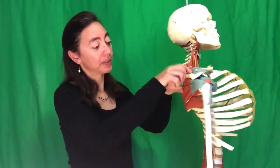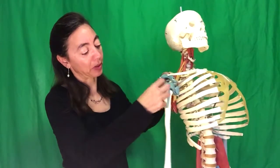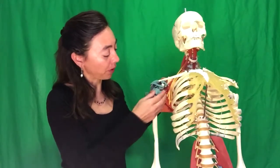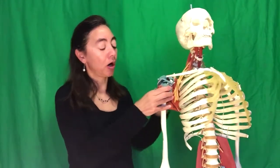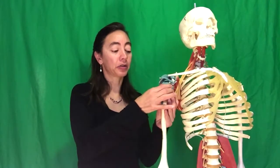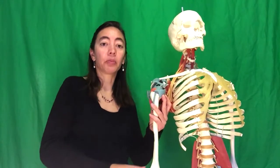There's two on the backside. There's one that comes and travels underneath this bone, and there's a fourth that comes along the front side. All of them attach to the top of the humerus and are responsible for the small movements in the arm, the little movements.